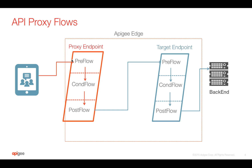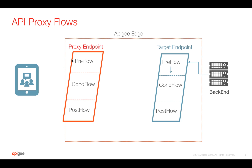When the response comes back from the backend, it first executes the target endpoint pre-flow. Then the response goes to the conditional flow and then to the post-flow. Once it finishes the target endpoint, the response comes back to the proxy endpoint pre-flow, then conditional flow, and then post-flow.